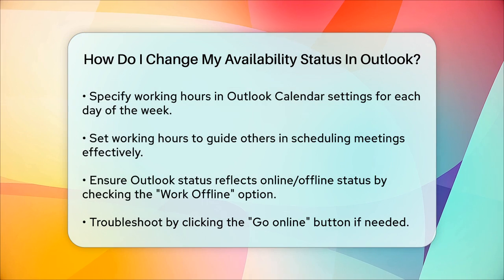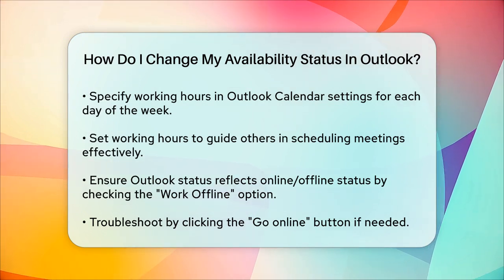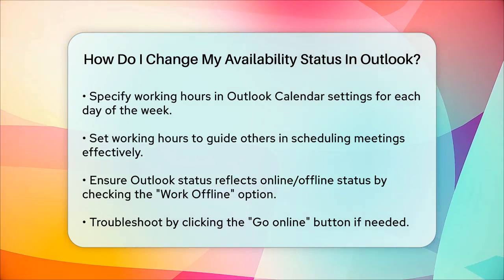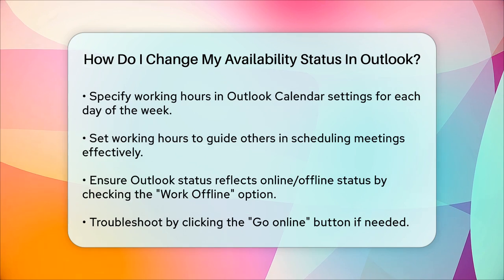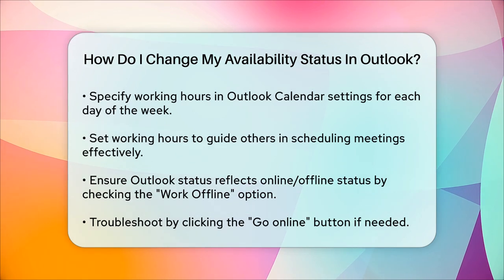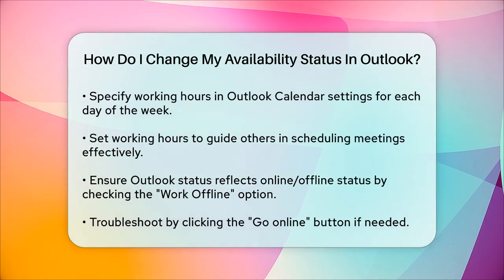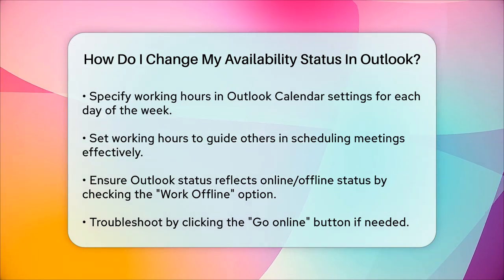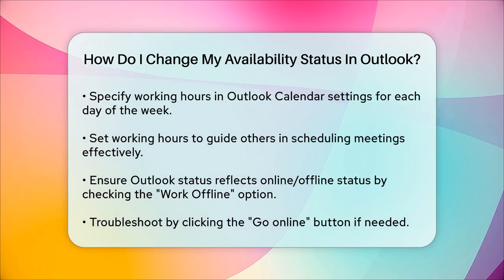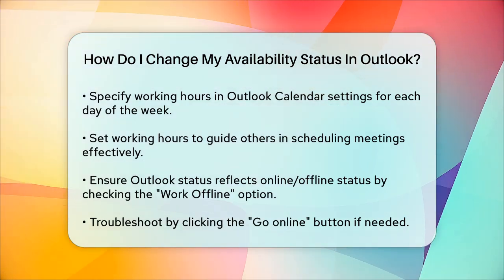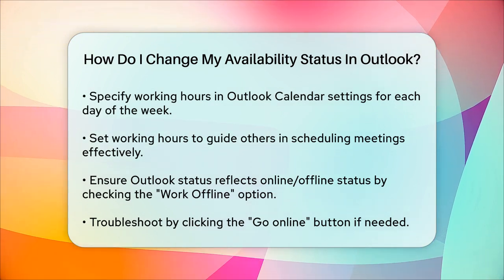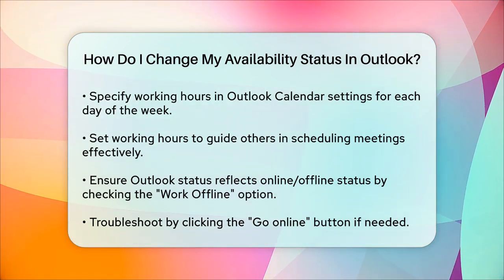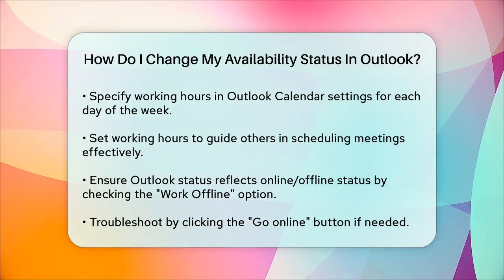Finally, if you want to ensure that your Outlook status reflects your offline or online status accurately, make sure to check the Work Offline checkbox in the Outlook menu. On a Mac, open Outlook, click on the Outlook menu, and uncheck the Work Offline box to go online. If you're still having trouble, look for a Go Online button and click it to switch your status.